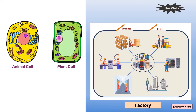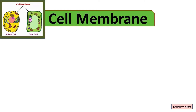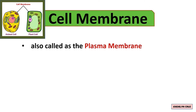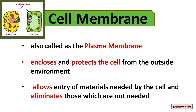The walls of the factory represent the cell membrane. They enclose the factory and control whatever comes in and out. Cell membrane is also called the plasma membrane. It encloses and protects the cell from the outside environment. It also allows entry of materials needed by the cell and eliminates those which are not needed.